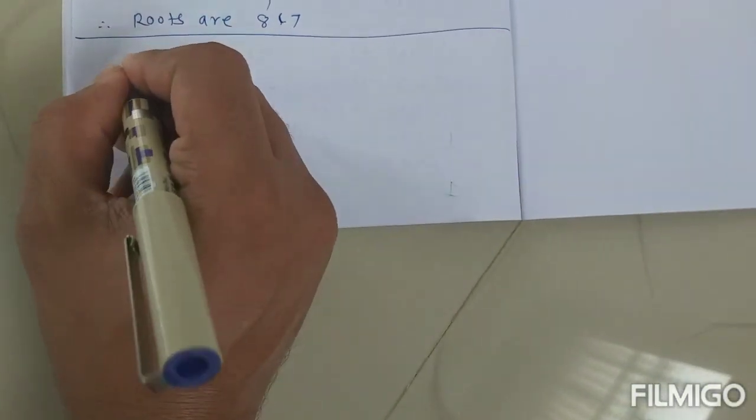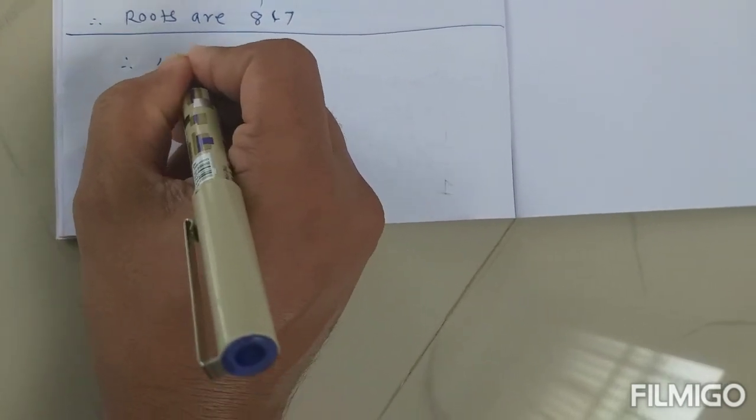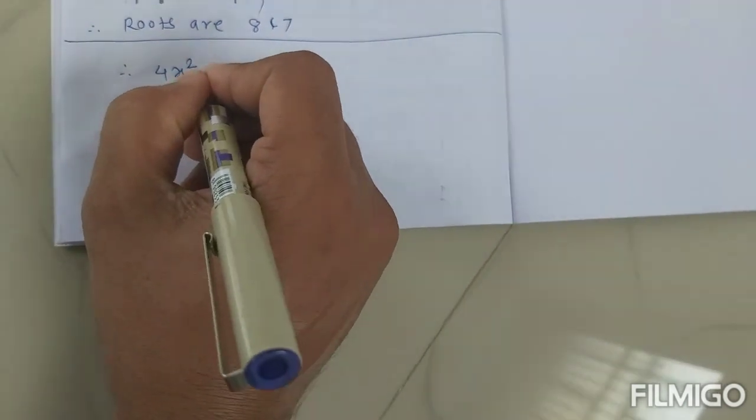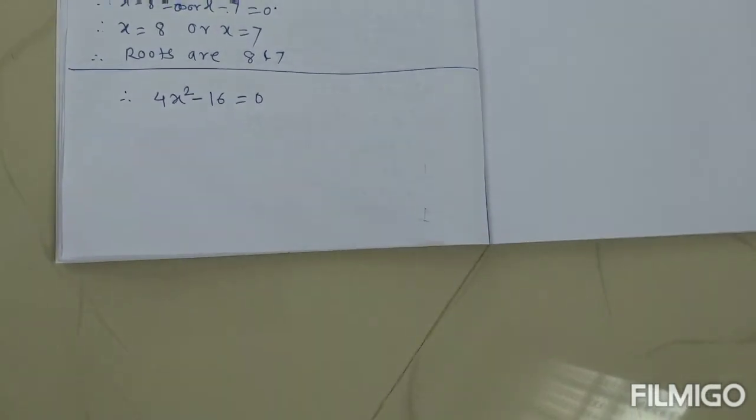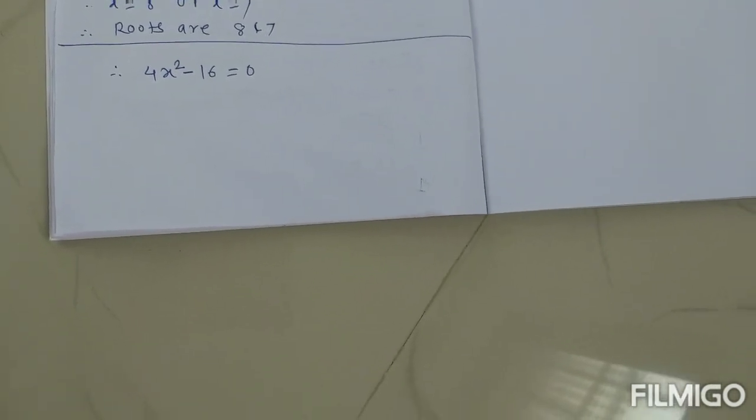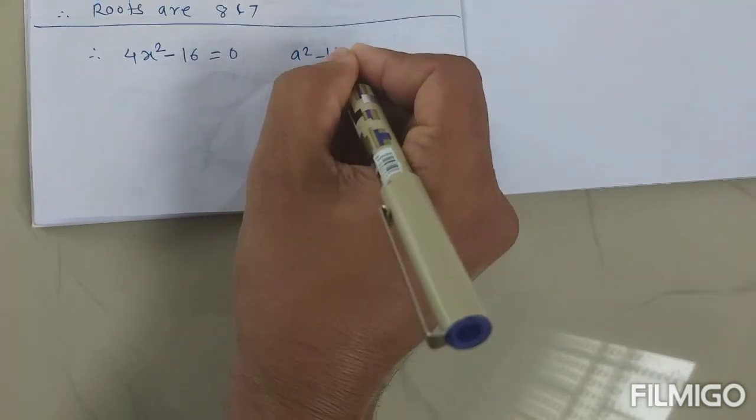One more example here. 4x² minus 16 is equal to 0. Now if you see this example, it is in the form of a² minus b².